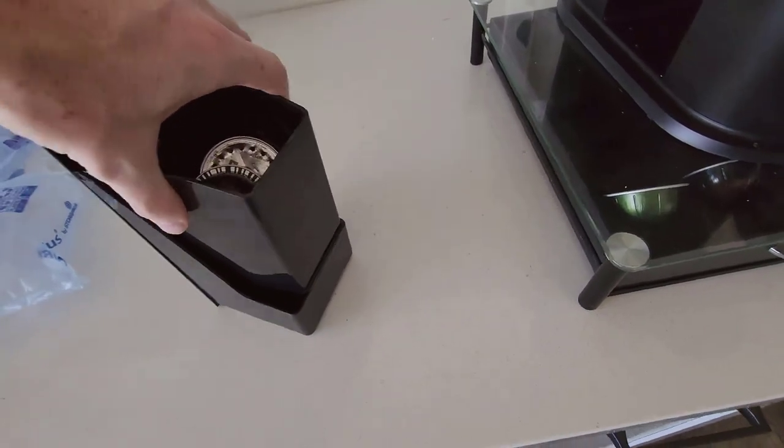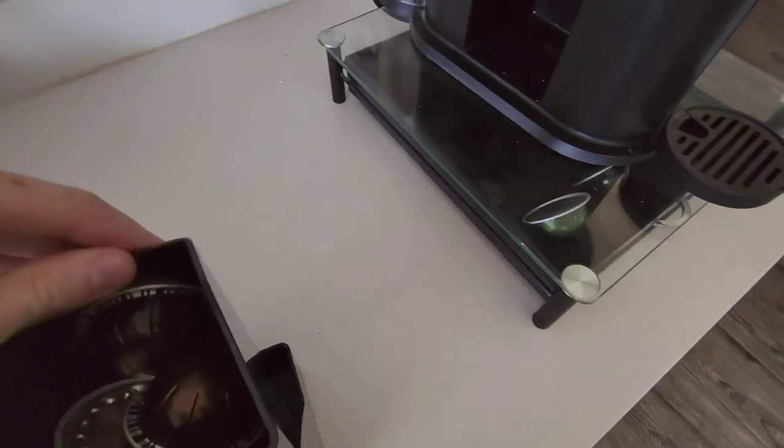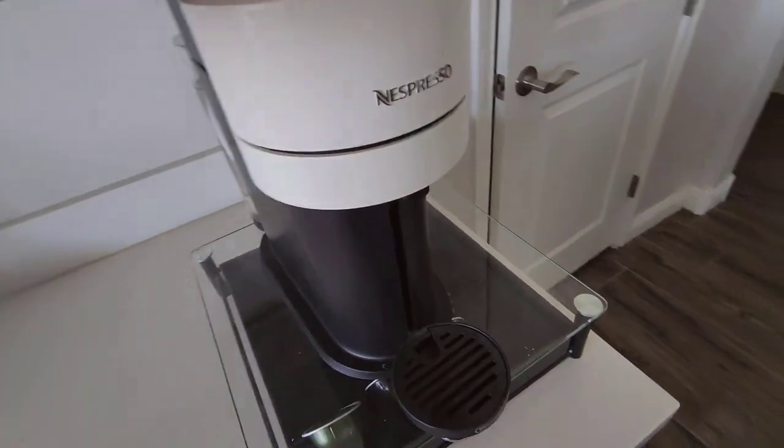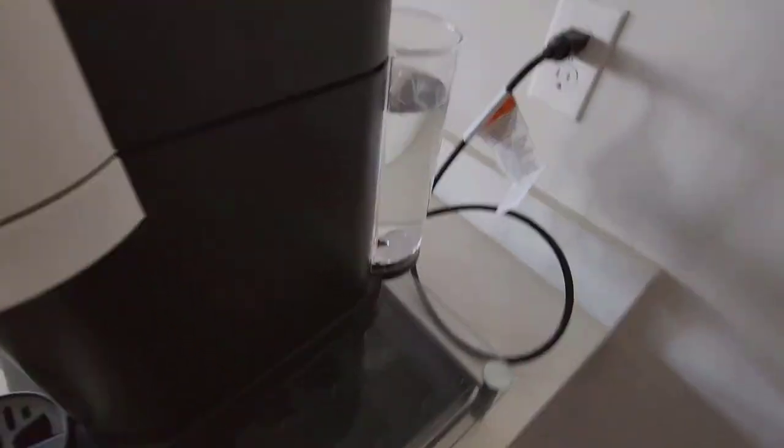Normally K-cups or Keurig stuff you have to take out. It's dripping, it's messy, you have to go throw it away. This one, super convenient, has a little garbage container right there. You can throw that in the garbage.